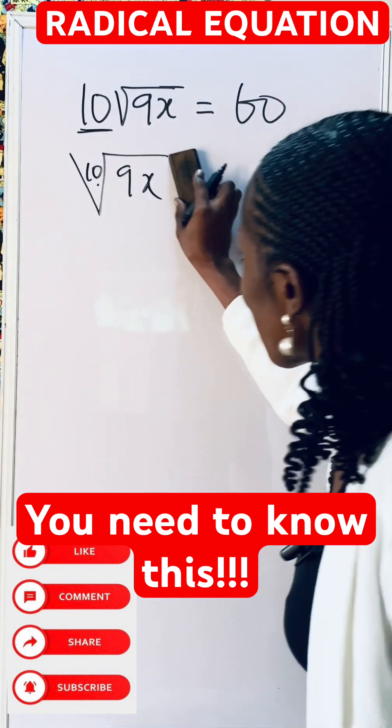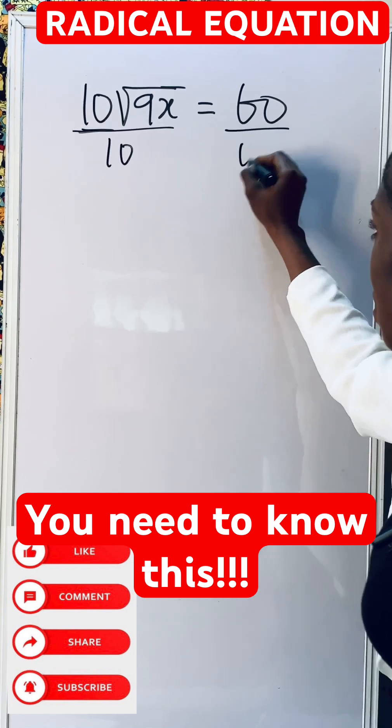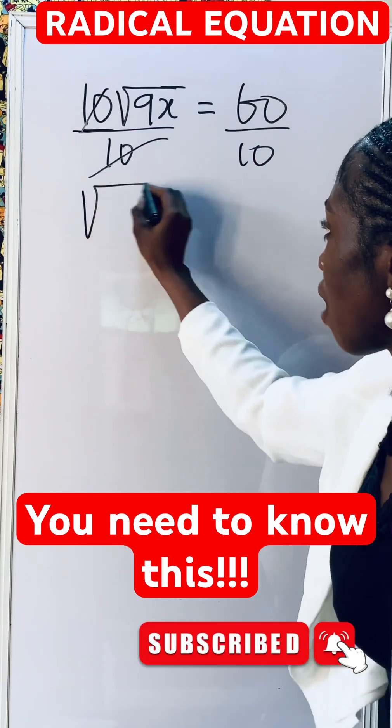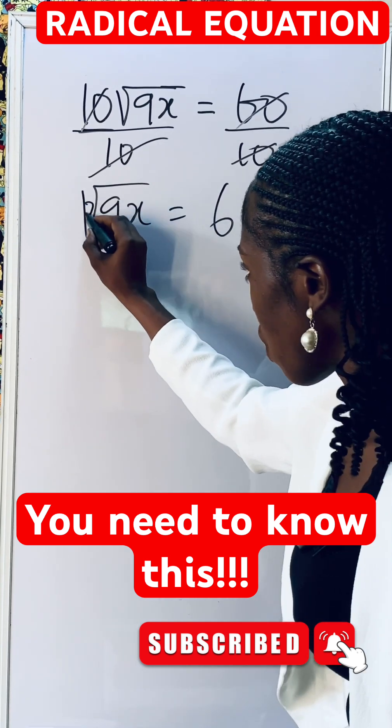So to answer this, what do you do? You're going to remove this coefficient. You divide both sides by 10, so you have root of 9x equals 6. This root is a square root.